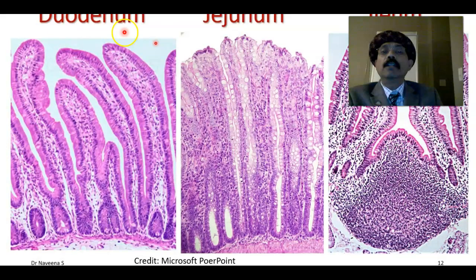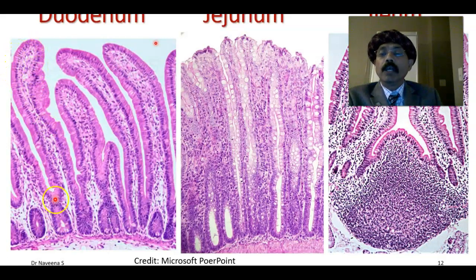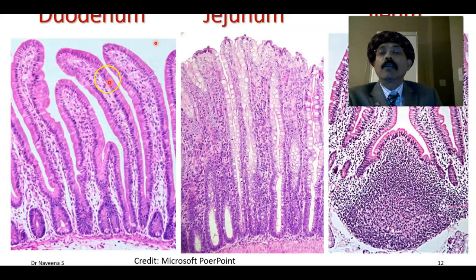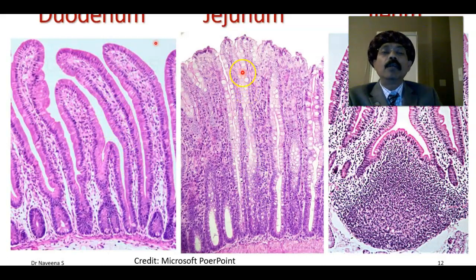Looking at the histological images of duodenum, jejunum, and ileum: this is the duodenum with the tall finger-like villi. We have the inter-villous space, the crypts of Lieberkühn, and these are lined by columnar epithelium, like other parts of the GI tract. This is the lamina propria. Here we have the villi of the jejunum — this is wider and shorter than that of the duodenum.